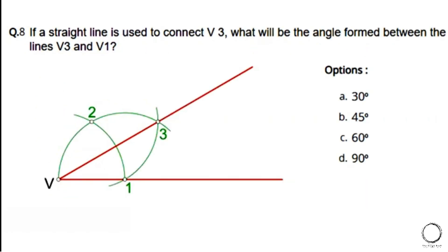Next: If a straight line is used to connect V3, what will be the angle formed between the lines V3 and V1? The options are: a) 30 degrees, b) 45 degrees, c) 60 degrees, d) 90 degrees. The right answer is option A — 30 degrees.